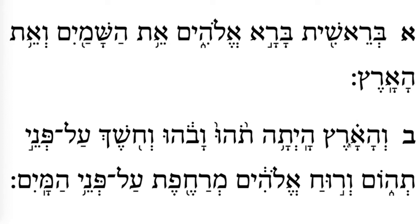Revi'i is a clause in and of itself, so we say 've-ha-aretz' — and you can breathe after a clause. You're not supposed to breathe in the middle of a clause. The next clause goes from mercha to katon: 'ha-yet-ah tohu va-vohu' — that's the end of another clause, meaning 'was formless and void.' And then the next clause is from ve-choshech up to tehom — 'and darkness was over the face of the deep.'